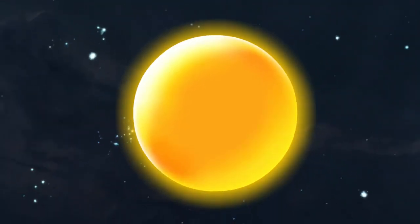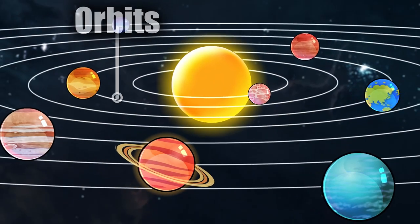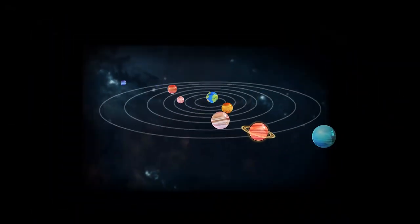The sun's enormous mass and gravitational power locks the planets in their orbits. If the sun disappeared, the planets would fly off in a straight line into space.